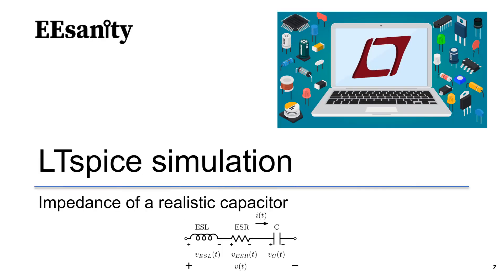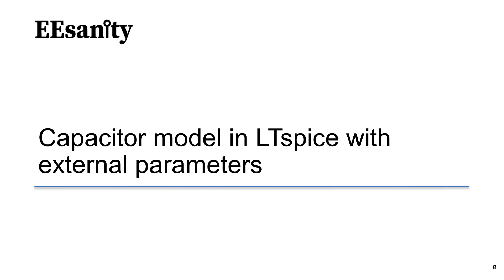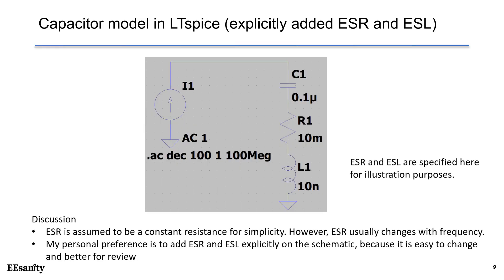Now, let's run some LTSpice simulation to study the impedance of a realistic capacitor, including ESL, ESR, and capacitor. There are two ways to complete the capacitor model in LTSpice. First, we put external parameters. As shown in this schematic, capacitor is given as 0.1 microfarad in series with a resistor R1, which is 10 milliohms, and an inductor 10 nanohenries. So these two actual components are explicitly added in the schematic, which is very easy to understand. In this case, ESR is assumed to be a constant resistance for simplicity reason.